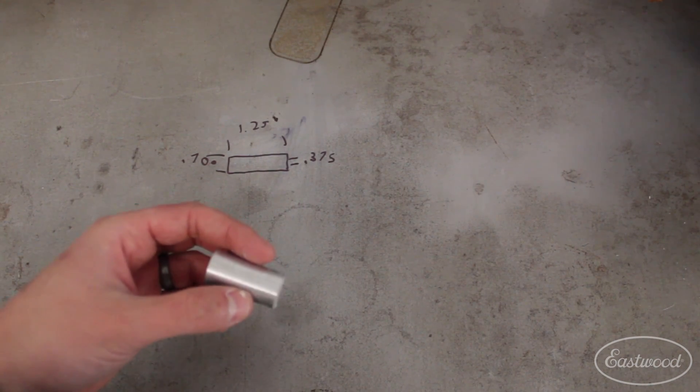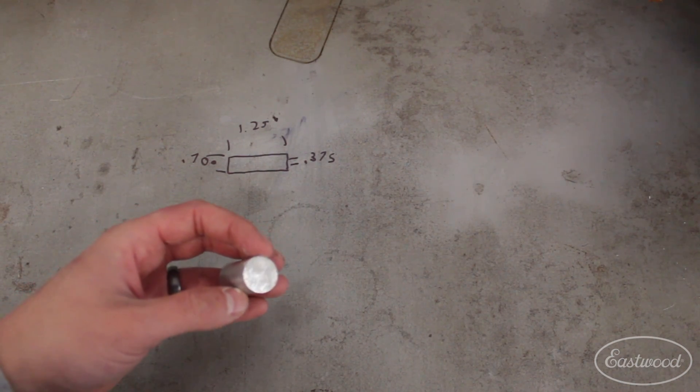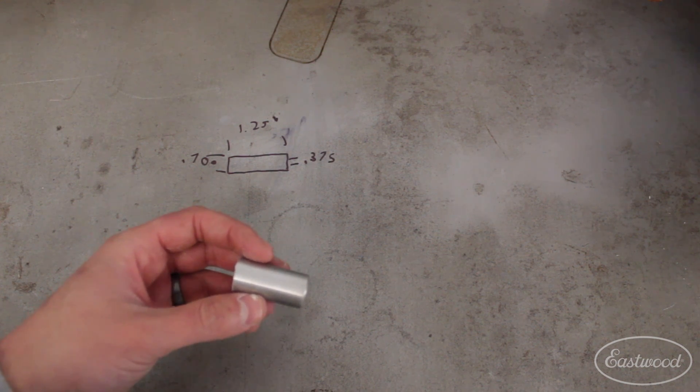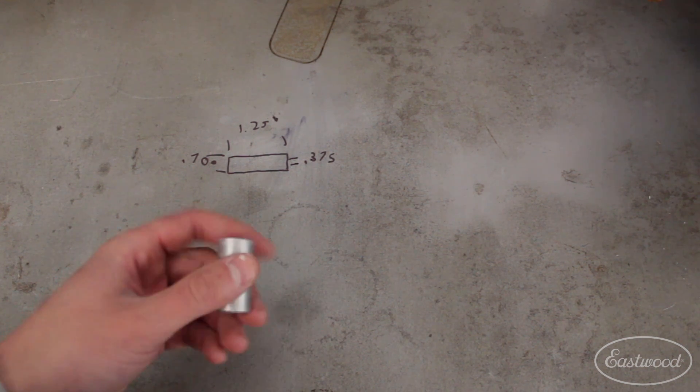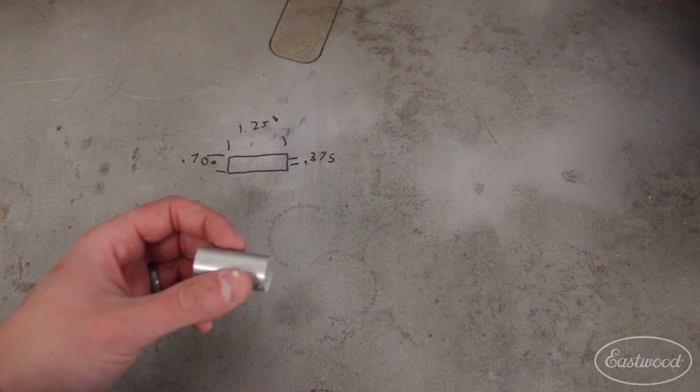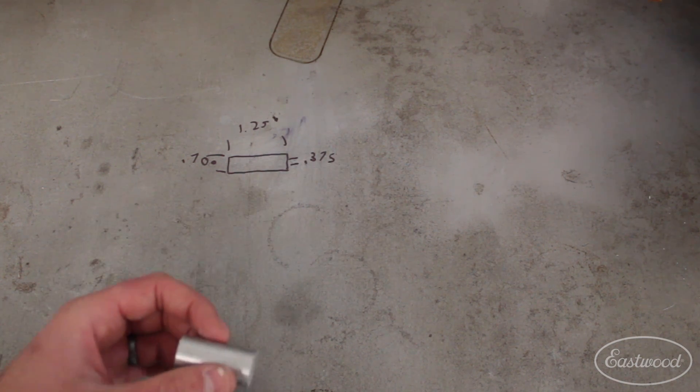Now before we chuck it in the lathe, one thing we did, we hit it quick with the hacksaw. We got that end off. Now we're at about an inch and a half in length. This should make it a little easier to get down to our inch and a quarter final length.